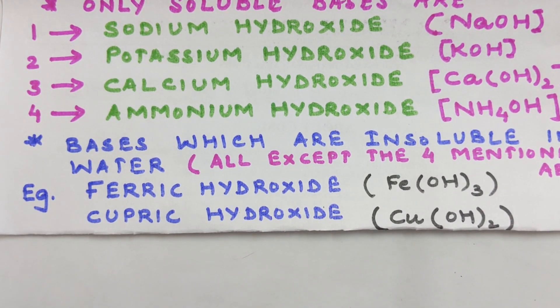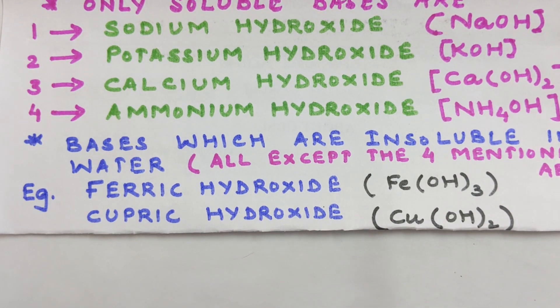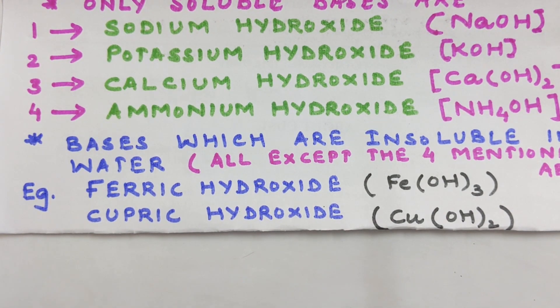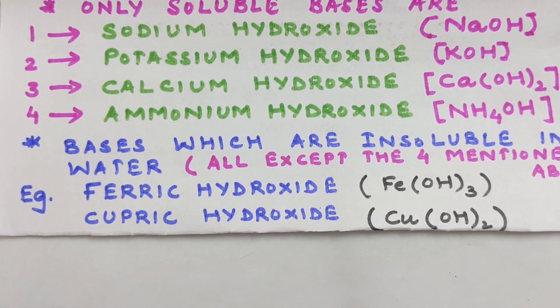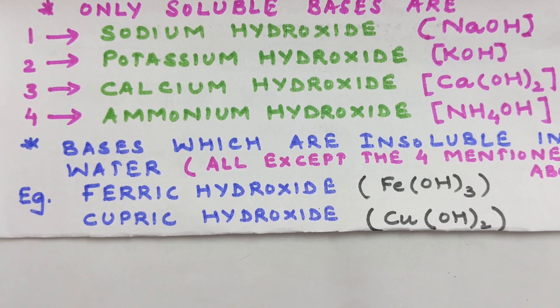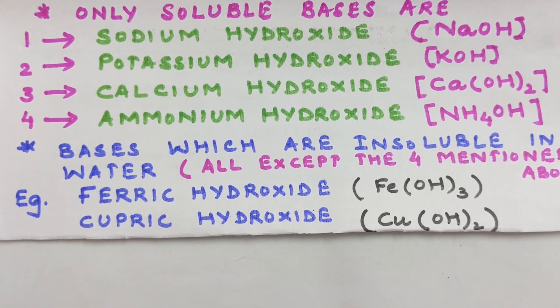But let us do two examples of those bases which are not soluble in water: ferric hydroxide Fe(OH)3 and cupric hydroxide Cu(OH)2. These are two examples of those bases which are not known as alkalis. So I hope you all have understood what are bases and alkalis.